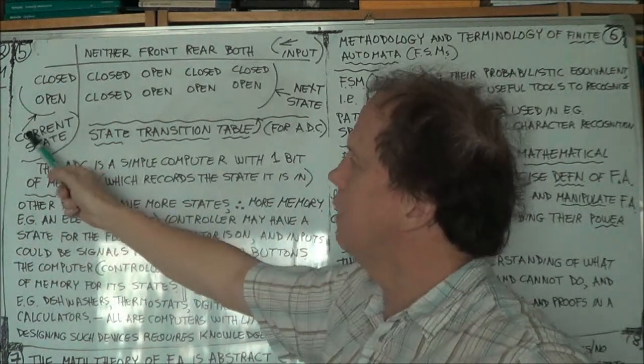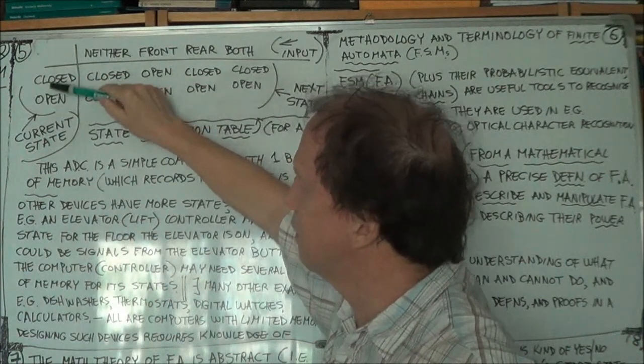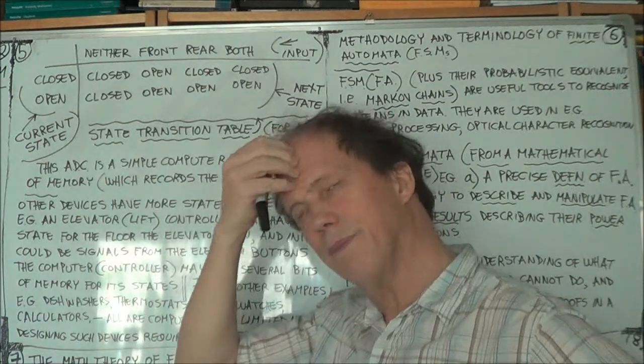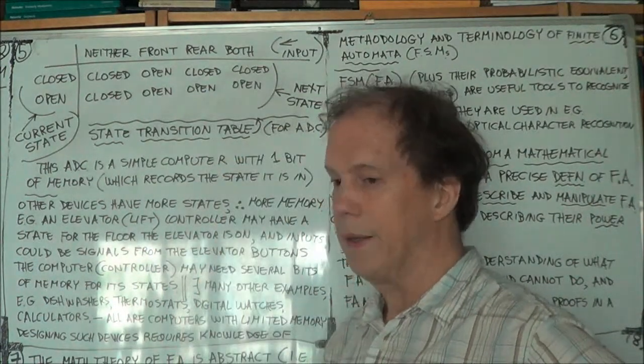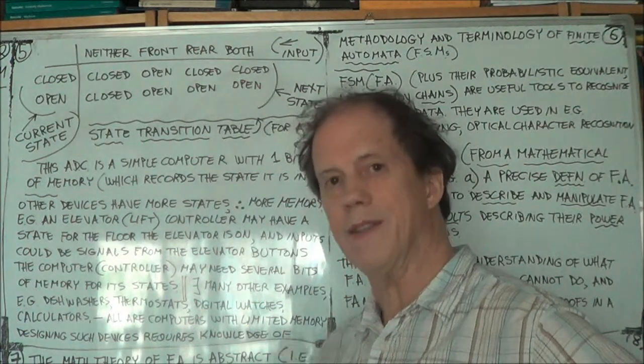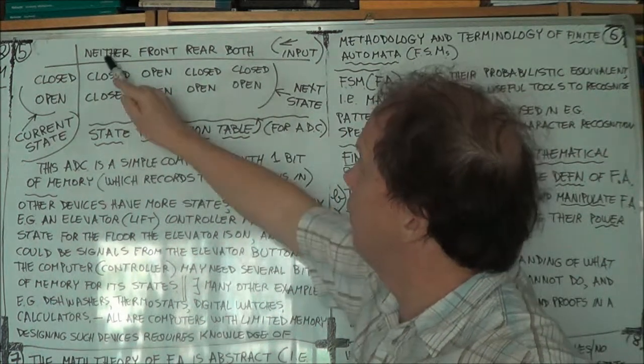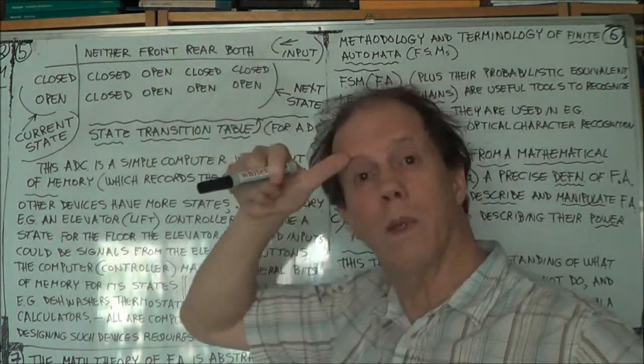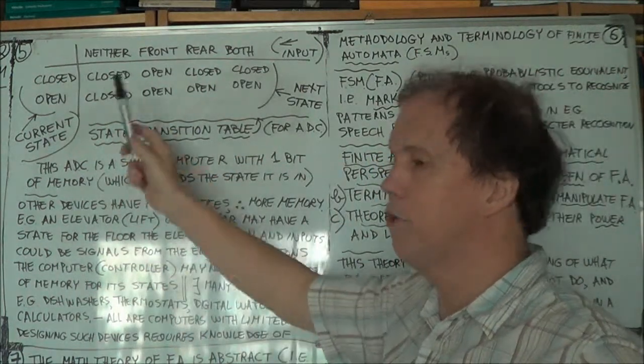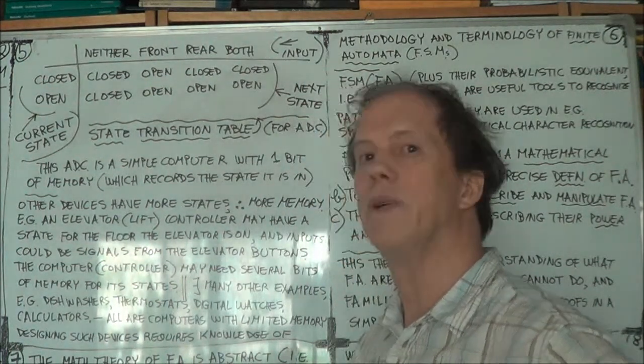So here you have two possible current states, and you only have two states in this very simple automaton, an automatic door controller, an ADC. And here you have your four possible input signals. Four by two, so you have eight possible situations, combinations.